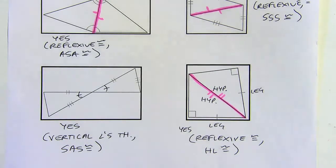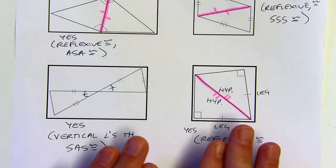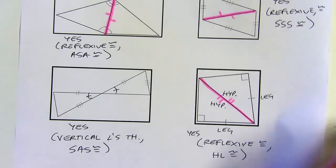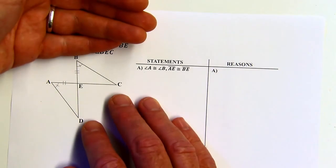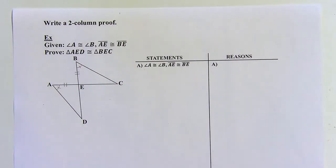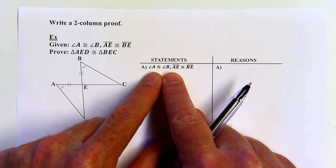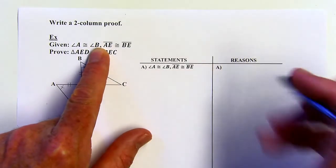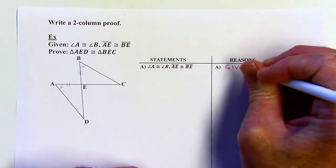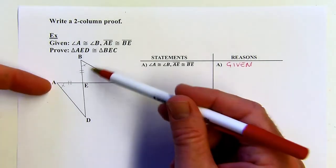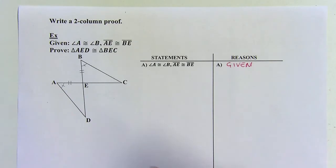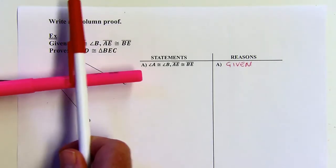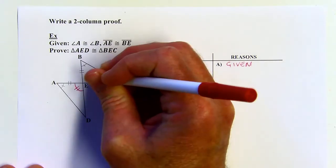On the next page, let's try some two-column proofs. Step one: rewrite the given info — angle A and angle B are congruent, and AE and BE are congruent. The reason is 'given.' I'm looking at this and thinking I've only got a pair of angles and a pair of sides — that's not enough. But I do have my bow-tie situation with intersecting lines, creating vertical angles. So I can say those two angles are congruent by the vertical angles theorem.